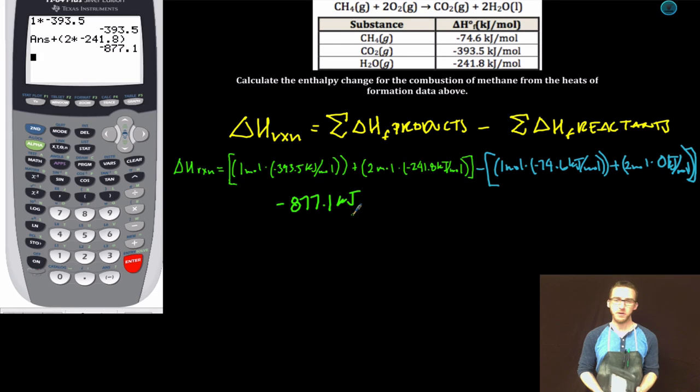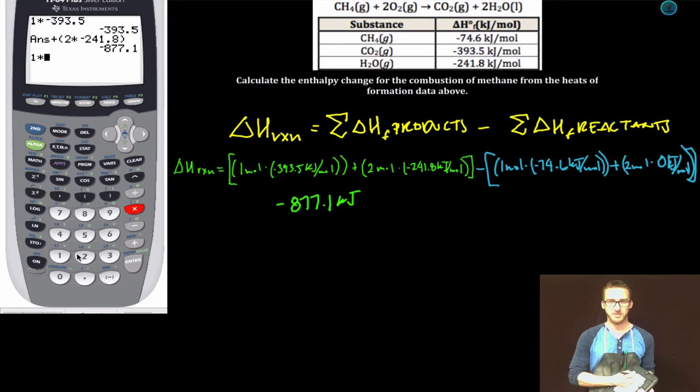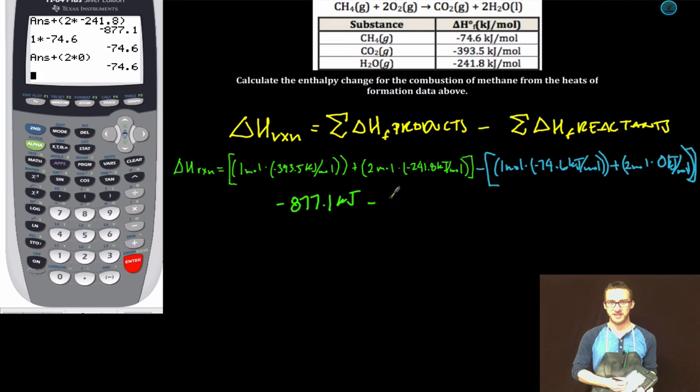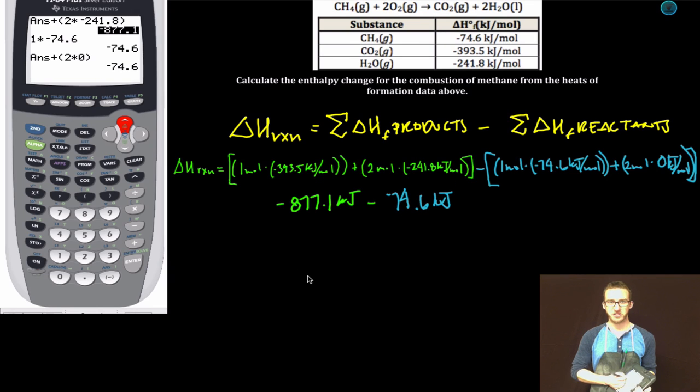One times negative 74.6 plus two times zero. Minus negative 74.6. Back to my calculator.